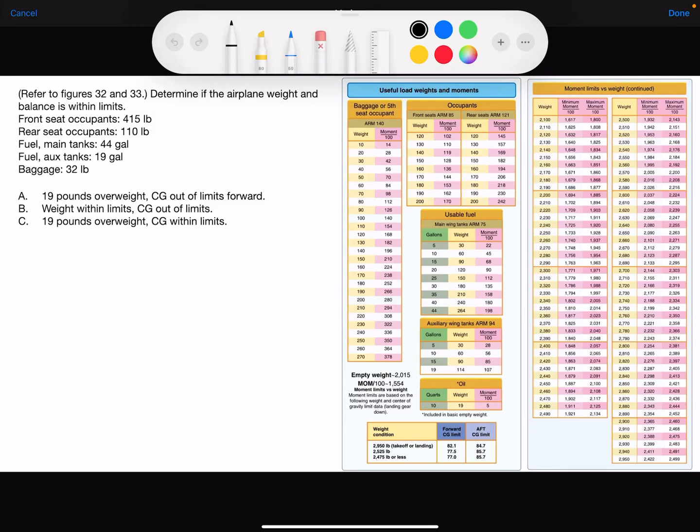Weight and balance test question: refer to Figures 32 and 33 to determine if the airplane weight and balance is within limits. They give us the weight of the front and rear seat occupants, the weight of baggage, and the fuel quantity in both the main tanks and the aux tanks. What they don't give you in the question, but what you can find on the figure, is the airplane empty weight and the moment, and that is right here.